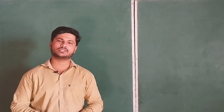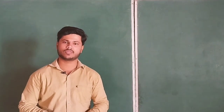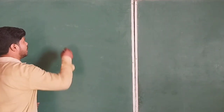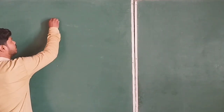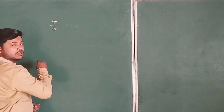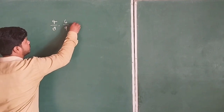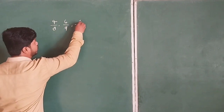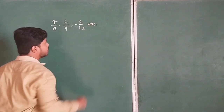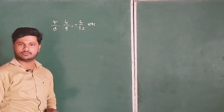We learn firstly what is a fraction. Numbers which can be written like 4/8, 6/9, -6/12, etc. — these numbers are called fractions.